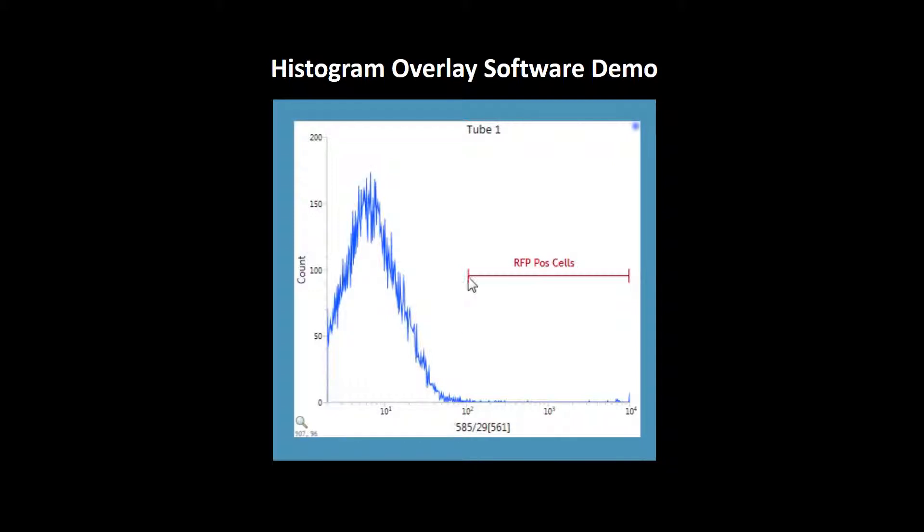This is unstained and I have put a gate here as an RFP positive gate. Whatever RFP positive cells come, it should show in this plot.